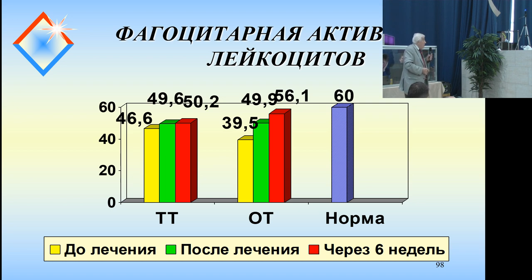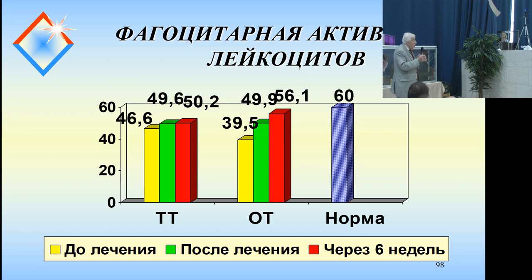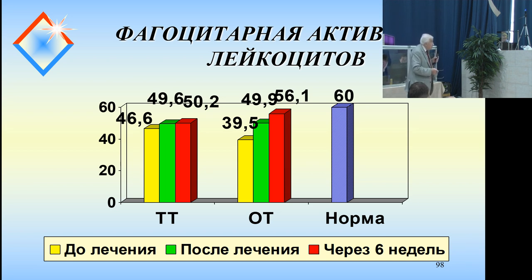Phagocytic activity of leukocytes — the norm, you see, is 60; the measured value is 56.1. Looking at ozone therapy after 6 months, the result is also very good.